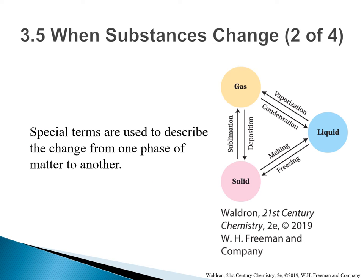There are special terms used to describe the change from one phase of matter to another. When a liquid turns into a gas, it's called vaporization. On the reverse side, the gas condenses back into liquid — for example, water vaporizes into steam, then the hot steam cools off and condenses back to liquid water. When a solid turns into a liquid, such as from ice to water, we call it melting. When you place a cup of water in a freezer, liquid water turns to ice — this process is called freezing.